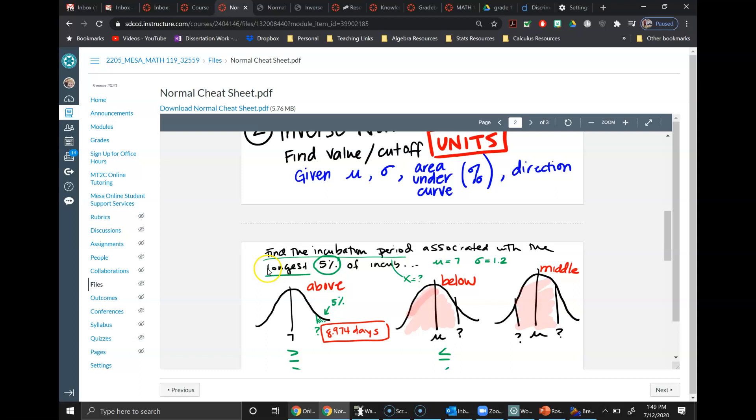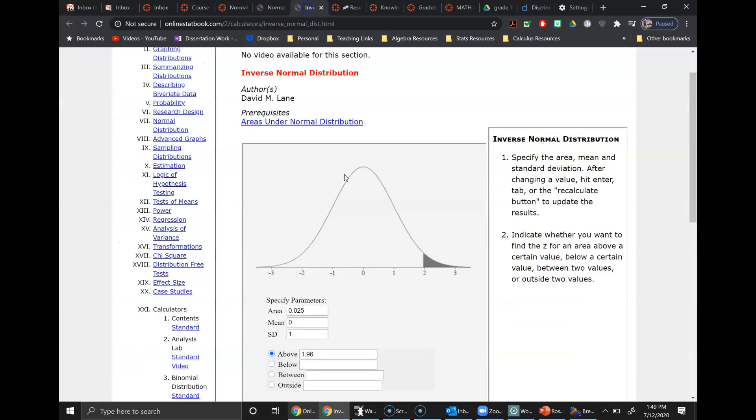So we can go here, seven, 1.2. We do need to be careful when we convert from percents to decimals. Every single calculator uses a decimal version instead of the percent, so 0.05. If you do 0.5 it'll be right at the middle, and hopefully you'll recognize you made a mistake.